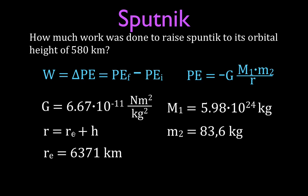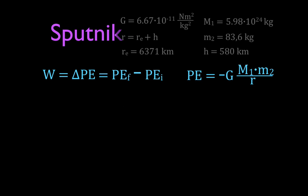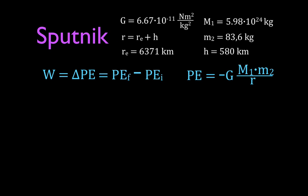r is the radius of the Earth, which is 6,371 kilometers, plus the object's height above the surface. When it's at the surface, h is zero and r is just the Earth's radius. When orbiting at 580 kilometers, we add those two values together to get r. So we're going to calculate the potential energy at the initial and final positions and subtract them — final minus initial.